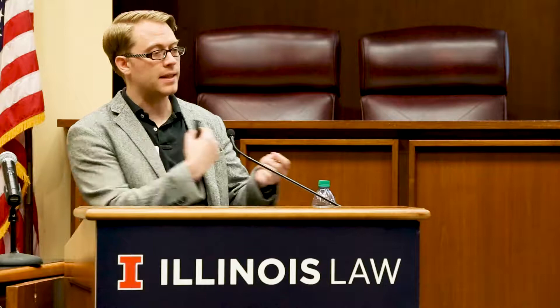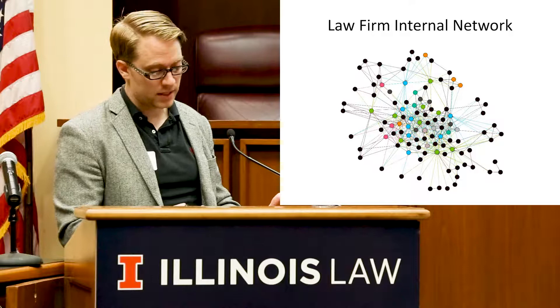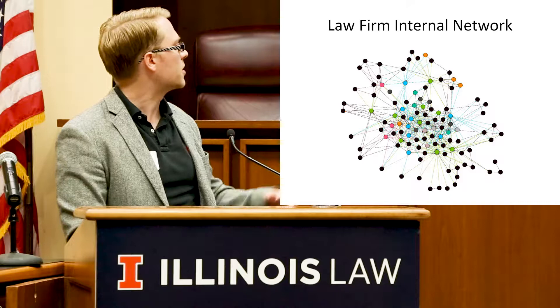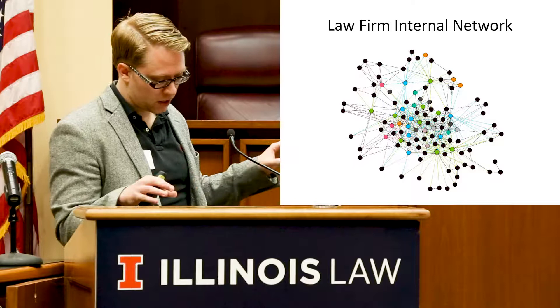What I did was I took press releases from a major large law firm and looked at what attorneys work with what other attorneys on these matters. If attorney A worked with attorney B, they got a tie. Using that, I was able to build this network. The attorneys are color-coded: the ones in black are corporate generalists, and the ones in different colors are specialists — orange is IP, green is tax, et cetera. To answer whether this is an integrated network or a lot of cliques, the answer is kind of both.